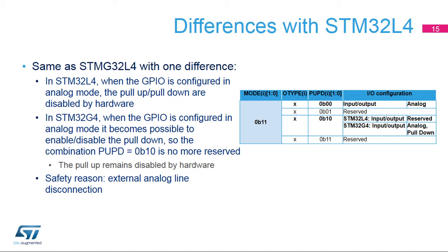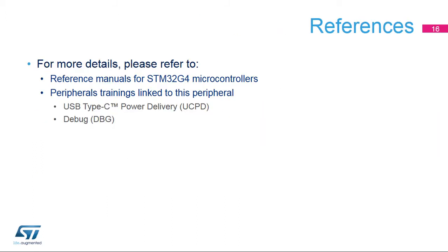This table shows the differences with the STM32L4 microcontroller. Analog with pull-down is a configuration supported by the STM32G4 but not by the STM32L4. Note that the STM32G4 also supports analog mode without pull-down. The purpose of the analog plus pull-down capability is to force a low level on the pin when the external analog line is disconnected, in order to avoid a floating state. For more details, refer to the STM32G4 reference manual and related trainings on USB Type-C power delivery (UCPD) and debug (DBG).